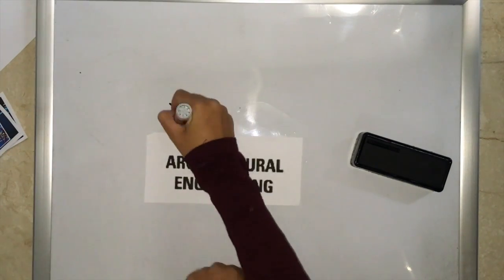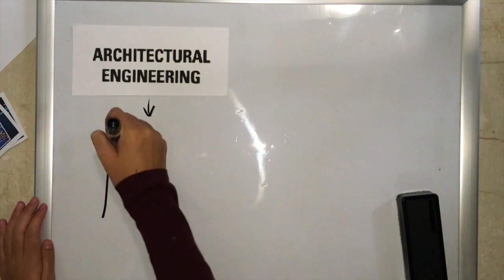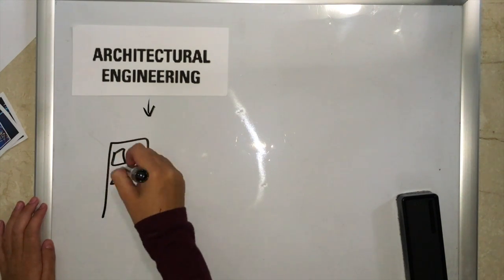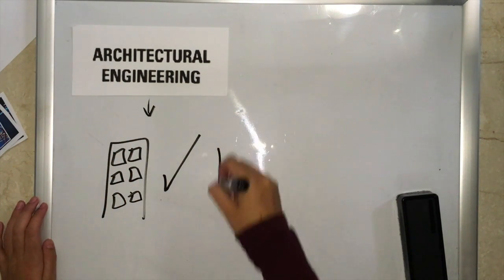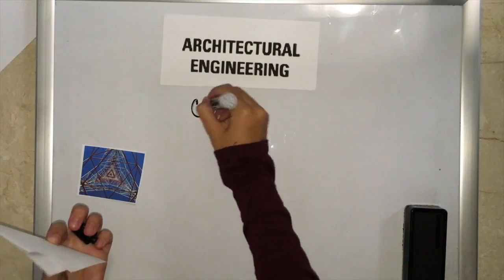Today we're going to focus on architectural engineering. What is architectural engineering? Architectural engineering is a type of engineering that is based on building and constructing buildings, homes, or bridges to be safe and well-designed.